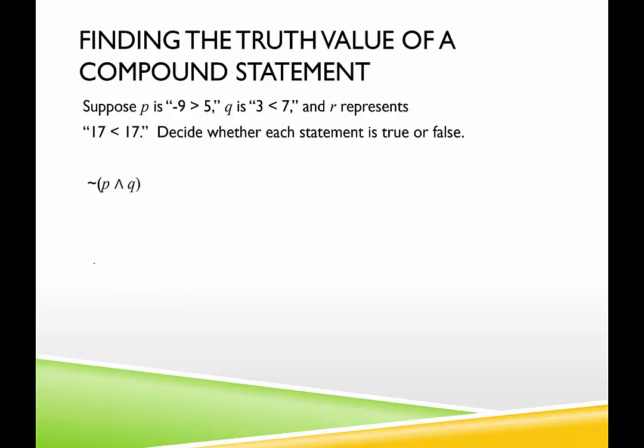How about this one? So this one's like order of operations here. We're going to look at P and Q, and then we're going to negate whatever that truth value is. So P, negative 9 is greater than 5 is false. Q, 3 is less than 7 is true.